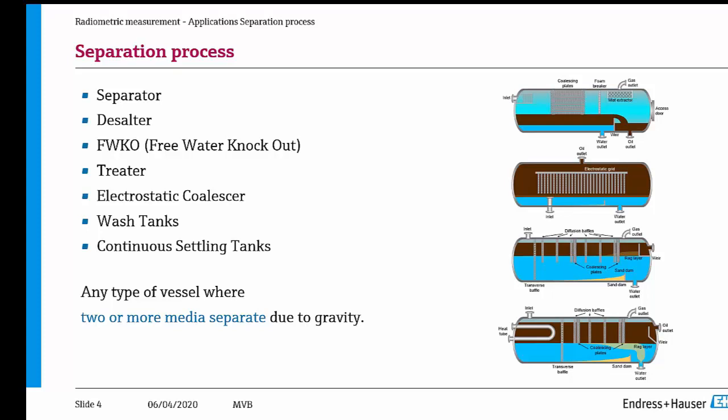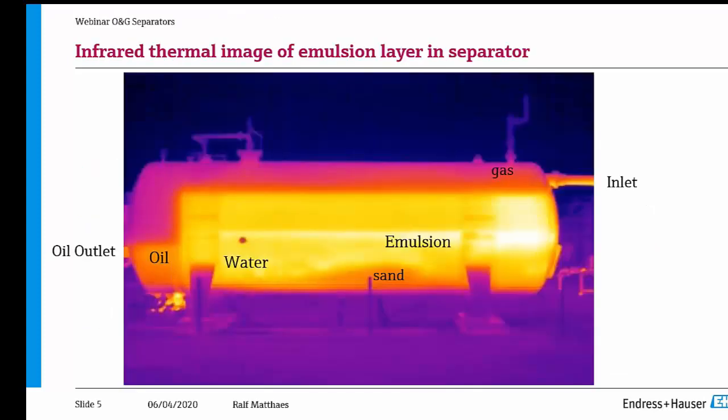All of them have something in common: to separate medium — water and oil, for instance. It's tough to see inside such a separation process, and one way to get a nice image is with an infrared camera. On the right side you can see the inlet, there's sand, there's emulsion, gas will be drained out, there's water, and on the left side there's oil. The weir separates oil from water.